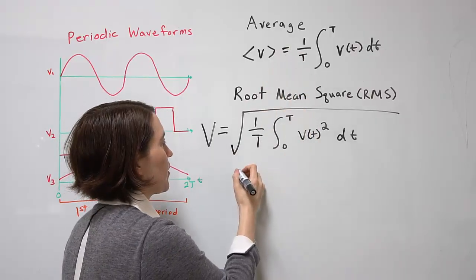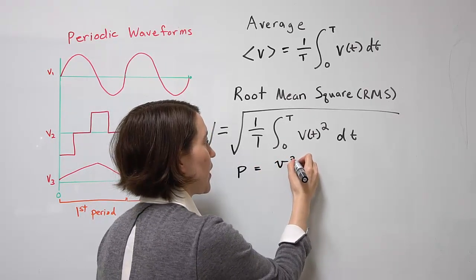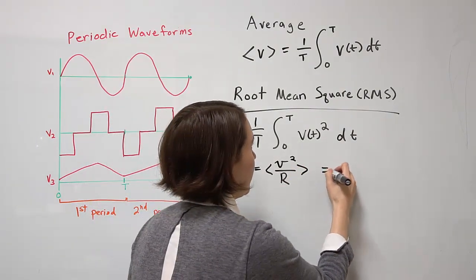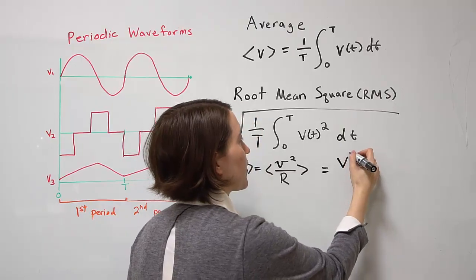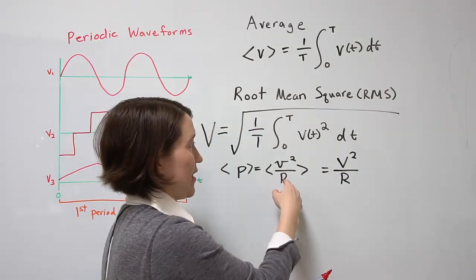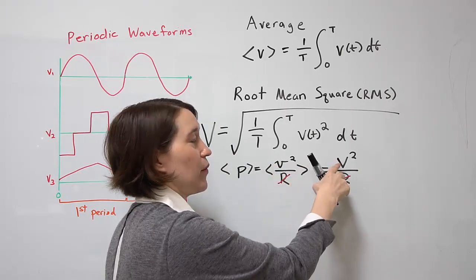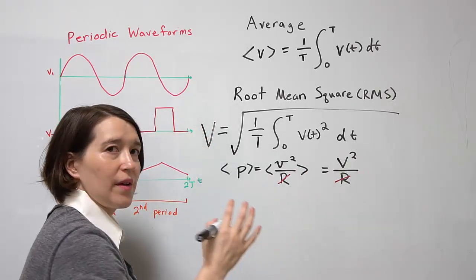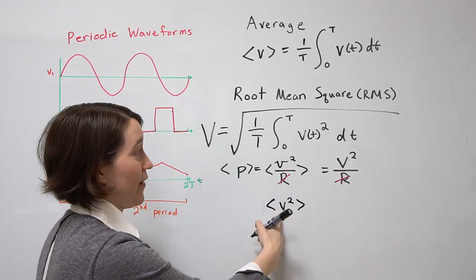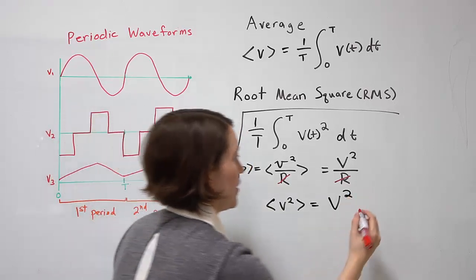This is the relationship between average power and RMS. Power to a system over a resistor is the voltage waveform squared divided by the resistor. If we take the average of that, we get average power out. The RMS is essentially the equivalent voltage squared over the same resistor. Since the resistor is constant, it cancels out, and what you're left with is: the average of V squared equals the RMS value squared. This is always true — a true relationship.